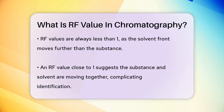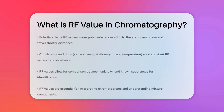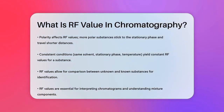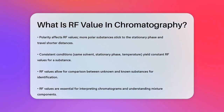These values are crucial for comparing results from different chromatograms. If the conditions are the same — same solvent, same stationary phase, same temperature — the RF value for a given substance should remain constant. This allows scientists to compare unknown substances to known ones and determine if they are the same compound.